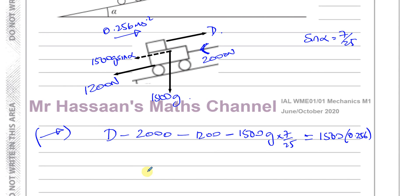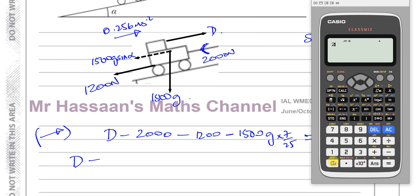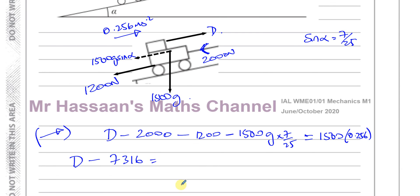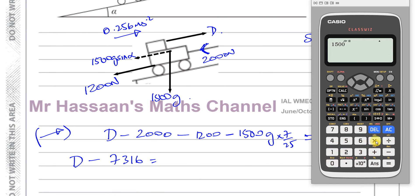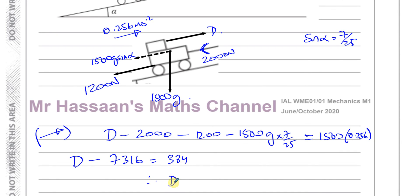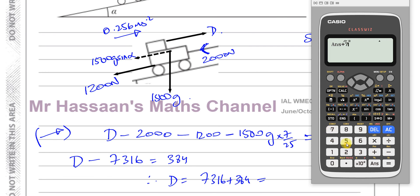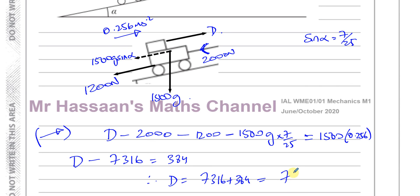The only unknown is D. So D equals 7,316 plus 384, which gives D equals 7,700 newtons. That is the driving force acting on the engine pushing the whole system up the incline.